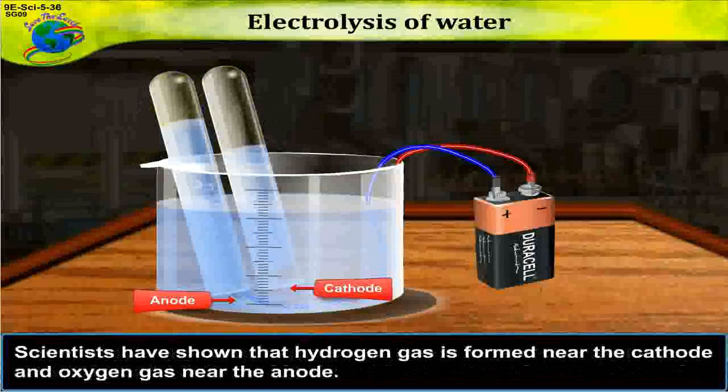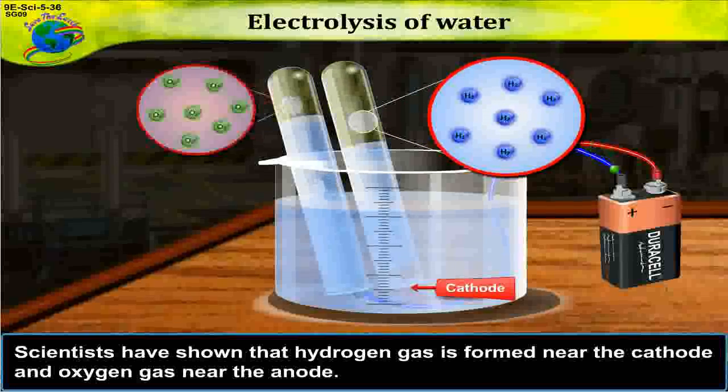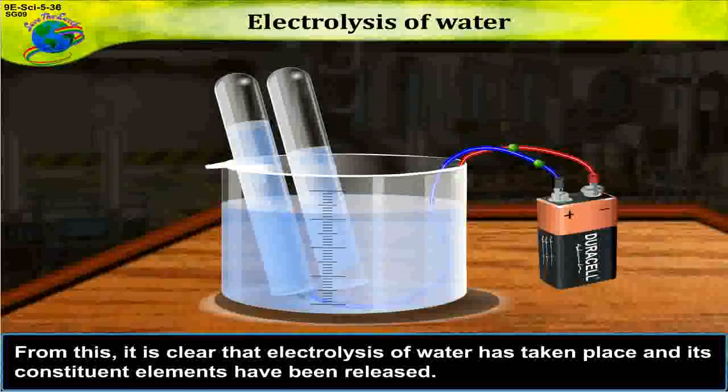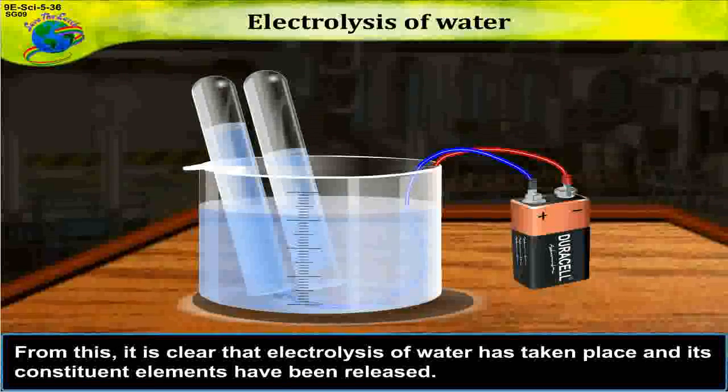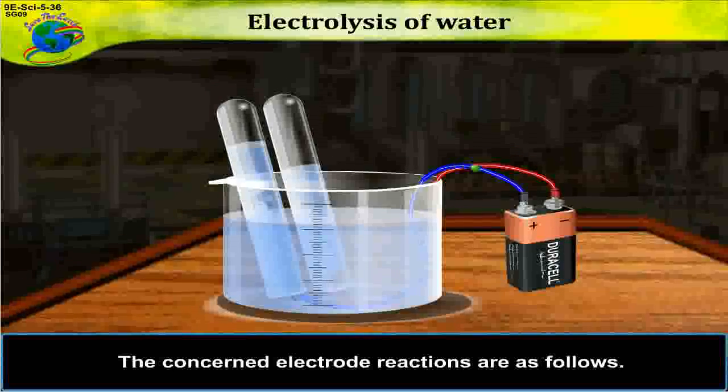Scientists have shown that hydrogen gas is formed near the cathode and oxygen gas near the anode. From this, it is clear that electrolysis of water has taken place and its constituent elements have been released.